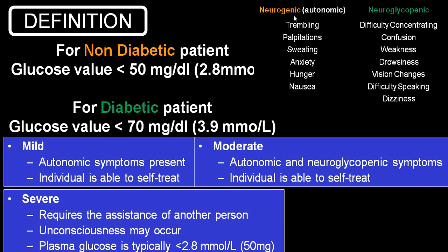Neurogenic or autonomic symptoms include trembling, palpitations, sweating, anxiety, hunger, nausea, etc. While in neuroglycopenic symptoms, mainly affecting the brain in the form of difficulty in concentration, confusion, weakness, drowsiness, altered level of consciousness, visual disturbances, difficulty in speech, dizziness — all these symptoms suggest that the brain is not receiving an adequate quantity of sugar.